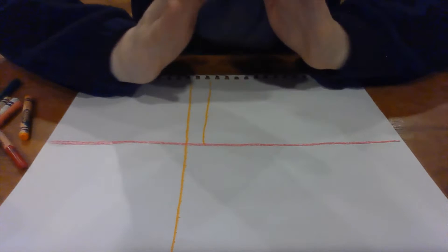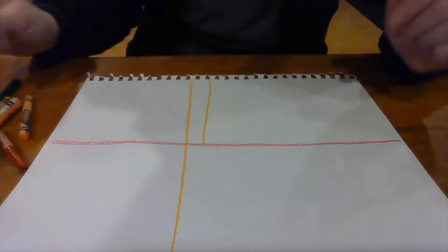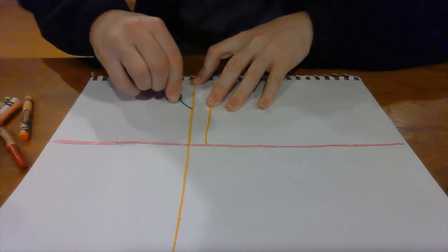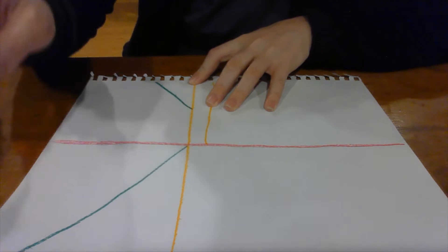So we talk about horizontal lines, we talk about vertical lines, and then I also talk to the students about like the lines at Ninja Chop—diagonal lines. So pick another color crayon. We can draw some diagonal lines on your paper too.